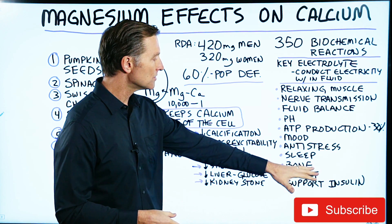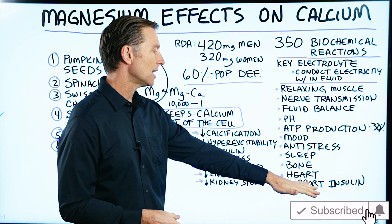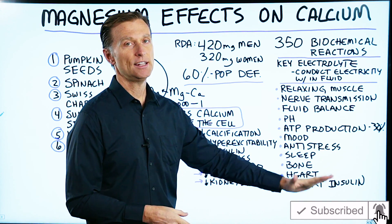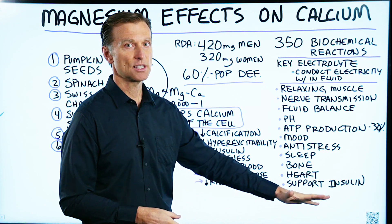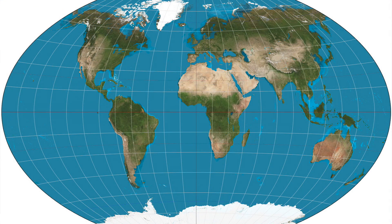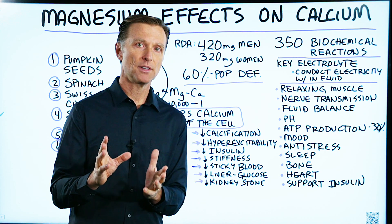It's involved in bone physiology, heart physiology, and supporting insulin. So you can see it's very, very important. Up to 60% of the entire population has a subclinical magnesium deficiency.